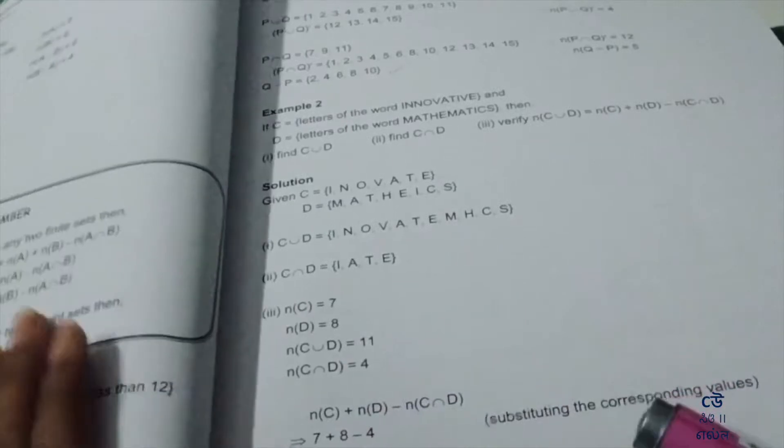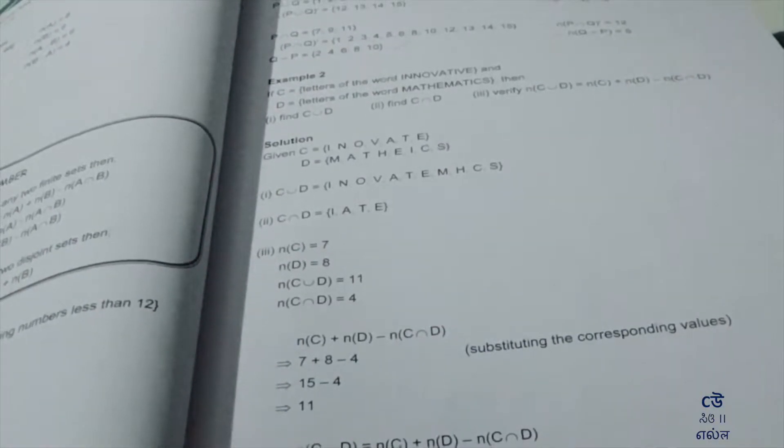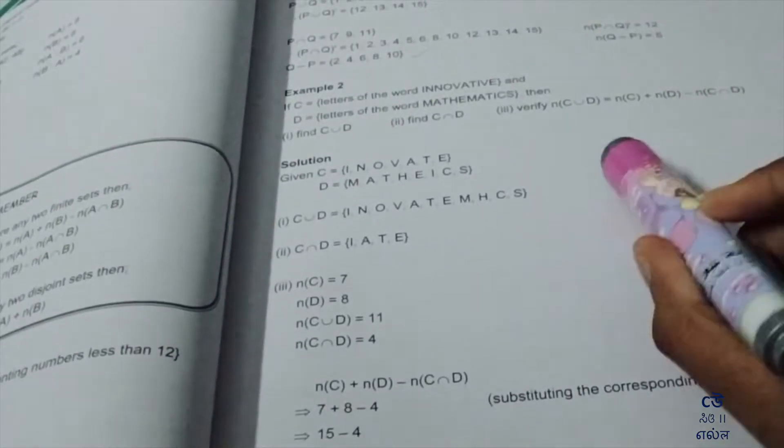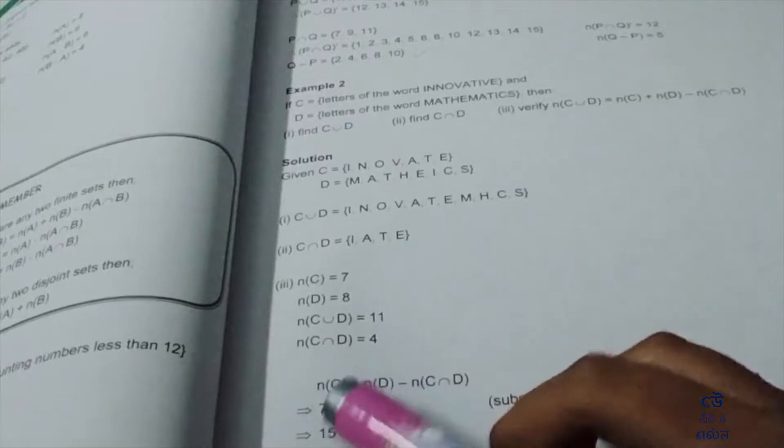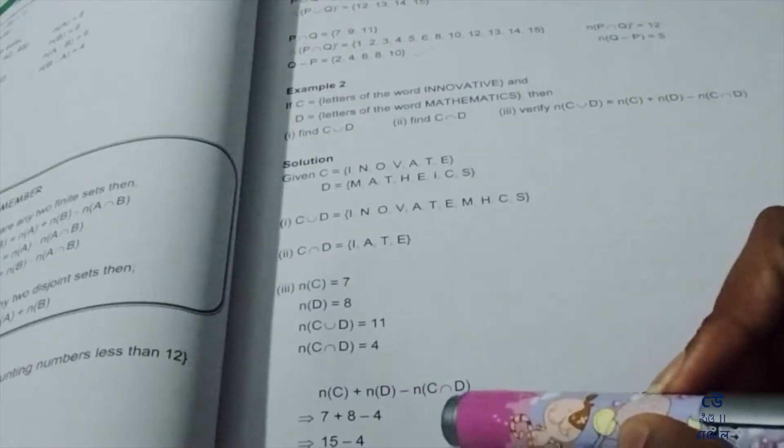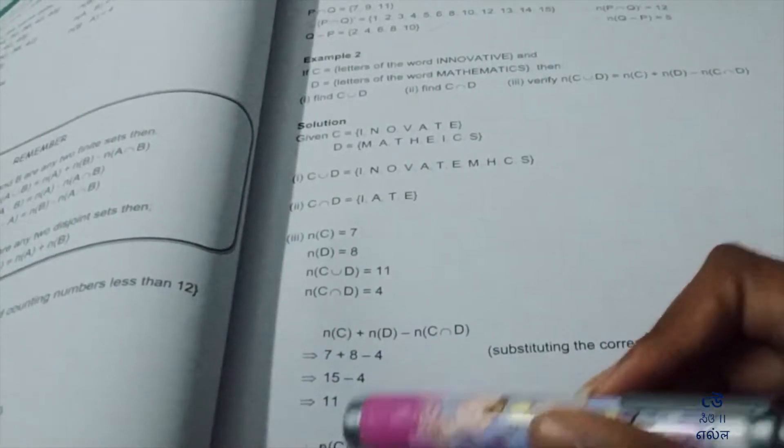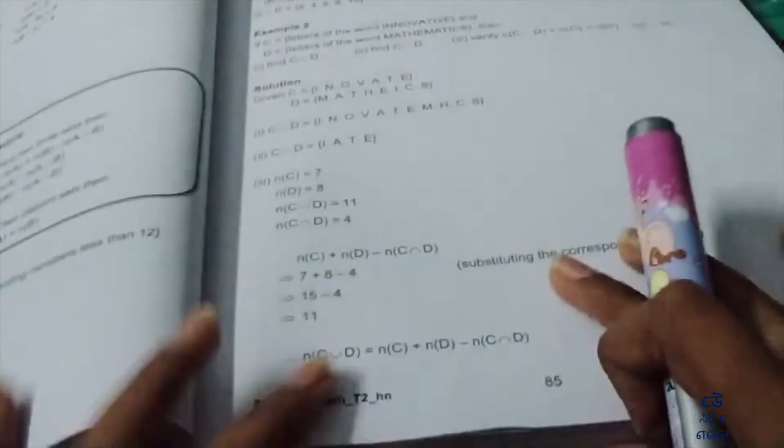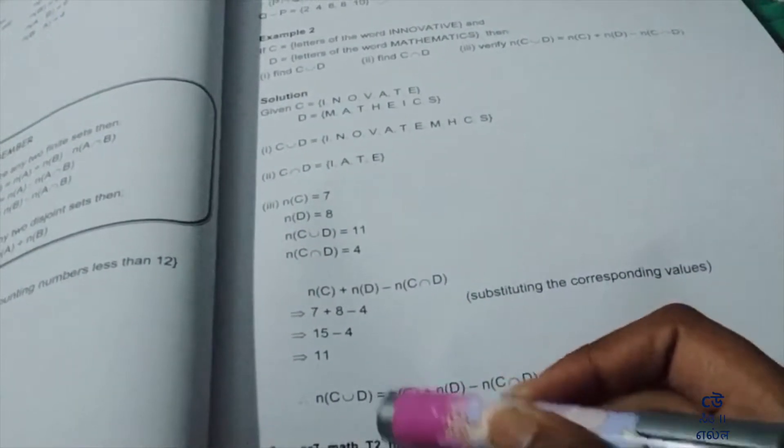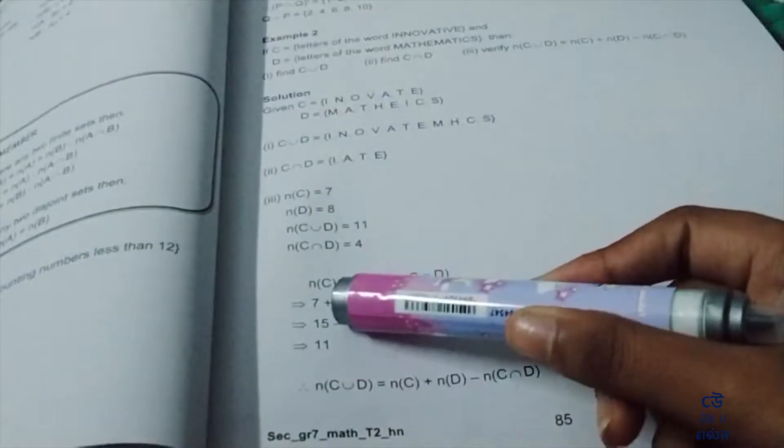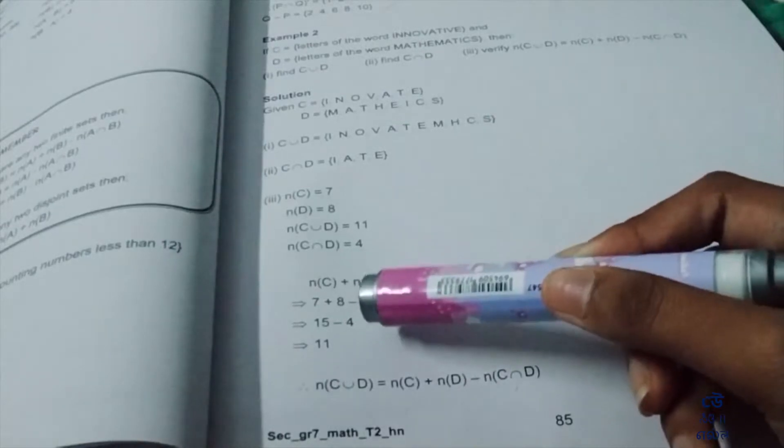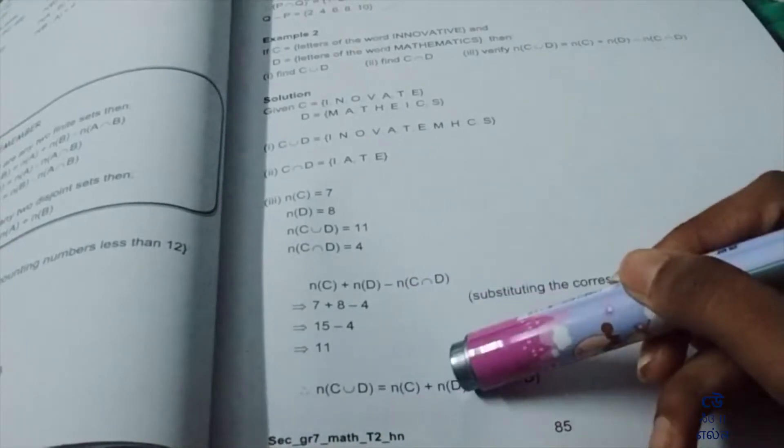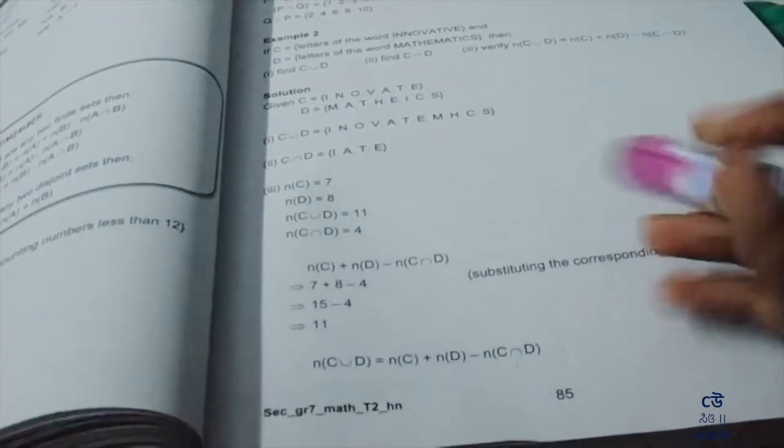n(C∩D) = 4. So n(C) = 7, n(D) = 8, n(C∩D) = 4. Substitute: 7 + 8 - 4 = 15 - 4 = 11. n(C∪D) equals 11, so we got 11. Therefore n(C∪D) = 11.